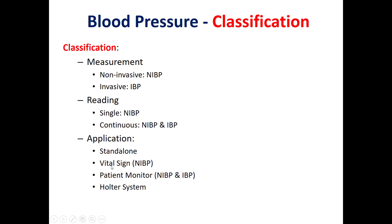For example, the vital signs monitor includes non-invasive blood pressure, temperature, and pulse oximeter readings. Another device is the patient monitor, which includes invasive and non-invasive blood pressure, electrocardiogram, pulse oximeter, temperature, CO2, and many other parameters. Blood pressure can also be used in a Holter system, which records blood pressure non-invasively over a long period — for example, one day or more.